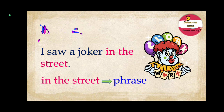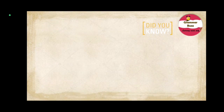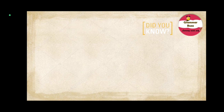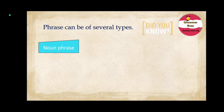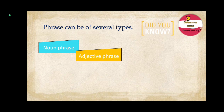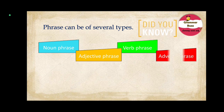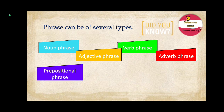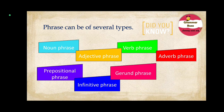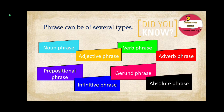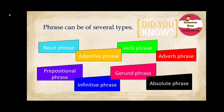Here comes our first 'Did you know.' Did you know phrases can be of several types? Yes, phrases are of several types, and they are: noun phrase, adjective phrase, verb phrase, adverb phrase, prepositional phrase, infinitive phrase, gerund phrase, and absolute phrase. But in this video, we will specifically discuss all about adjective phrases. So let us begin from the very beginning.